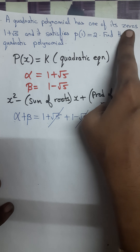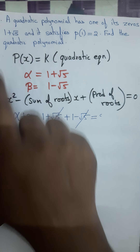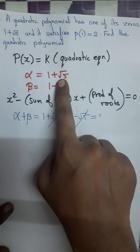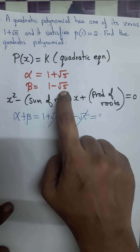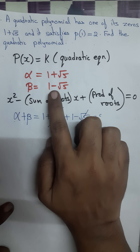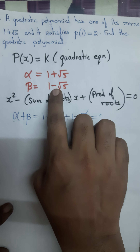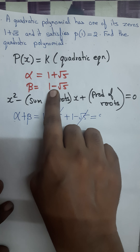In the question, they have given one of its zeros, that means one of its roots. One of the roots is 1 plus root 5, so alpha is 1 plus root 5. Root 5 is an irrational number, and there is a property for irrational numbers: if 1 plus root 5 is a root, then 1 minus root 5 must also be a root. So beta is 1 minus root 5.